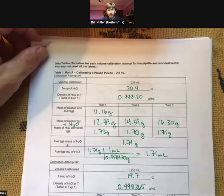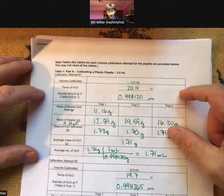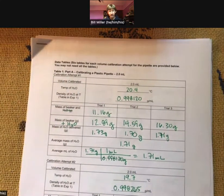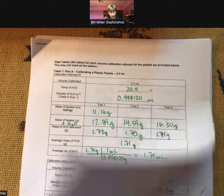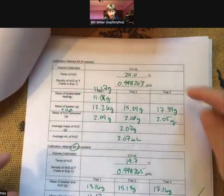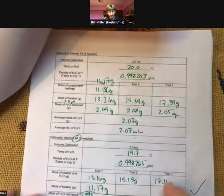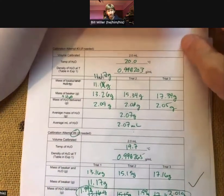Hello, this is going to be experiment two, filling out the summary data table. What I've got is my data from table one, and I've got my data here for two milliliters. I did three calibration attempts before I got to attempts four and five, and four and five were my two attempts that were within 0.02 milliliters.